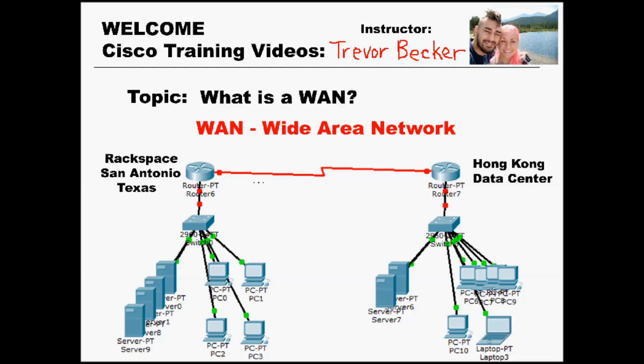Here's an example of a WAN topology. Right here we have a LAN that exists in San Antonio, Texas, and this LAN is simply a router connected to a switch, and then the switch is connected to a server farm and a couple of computers.